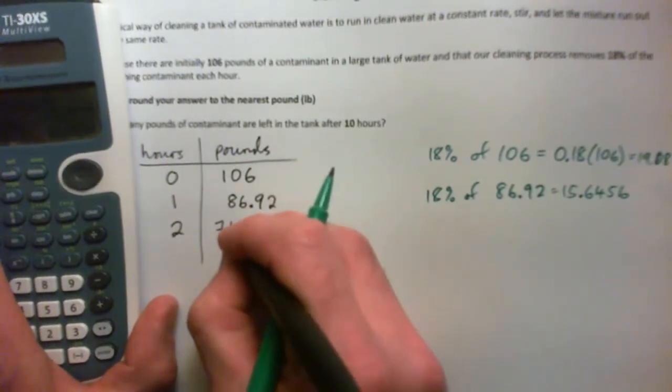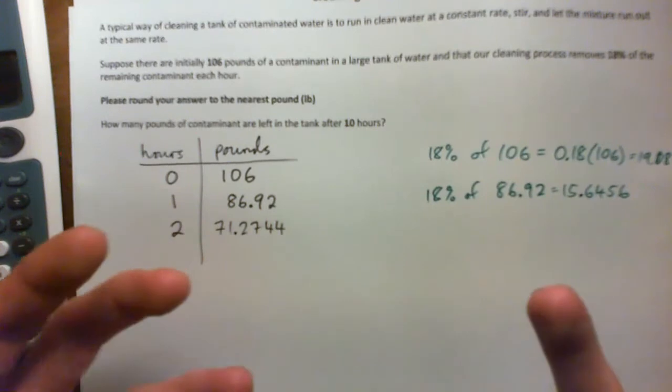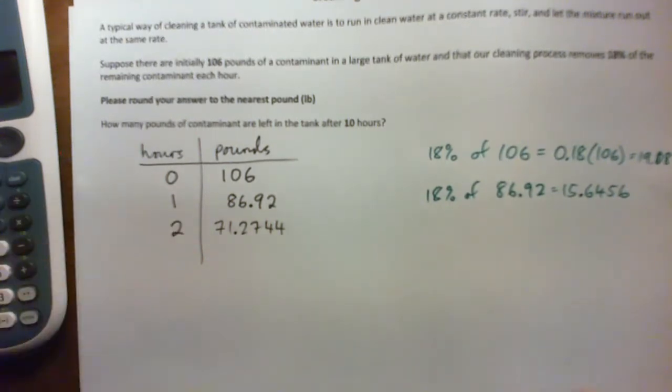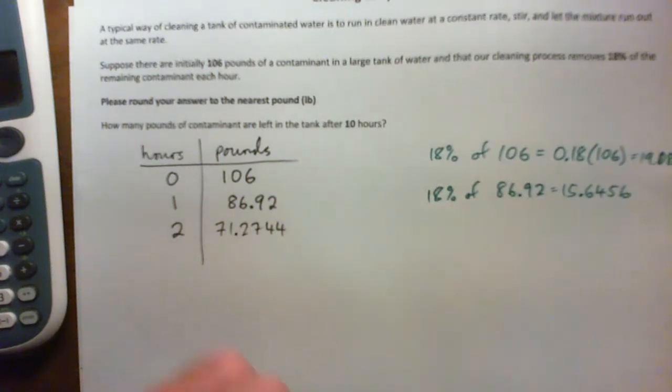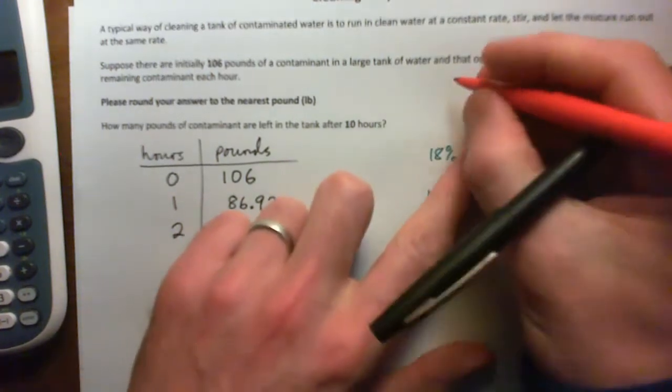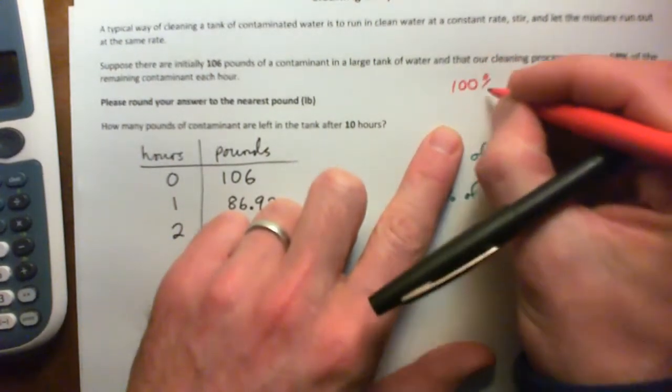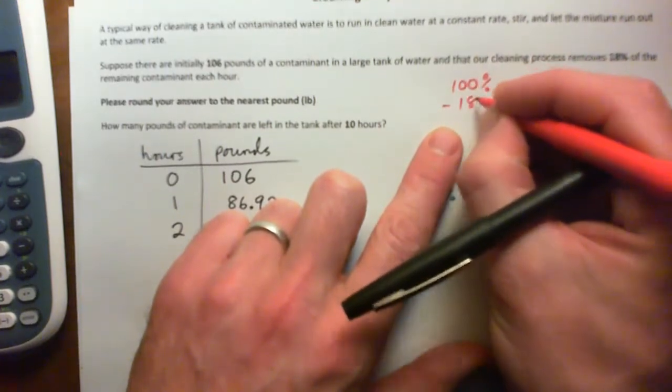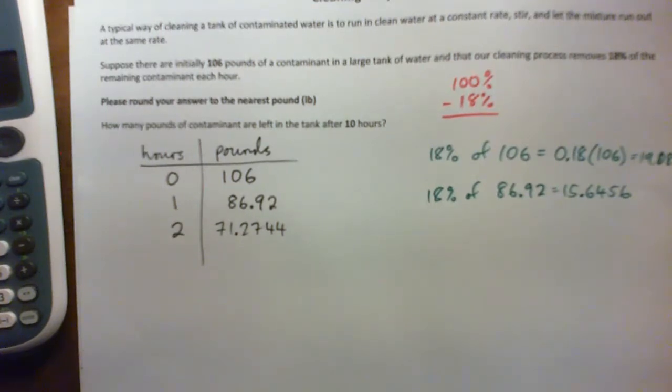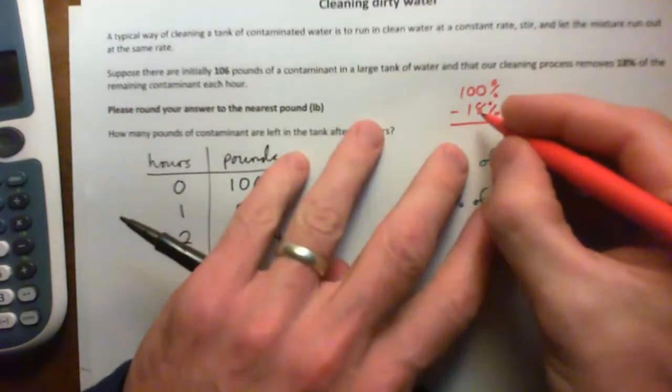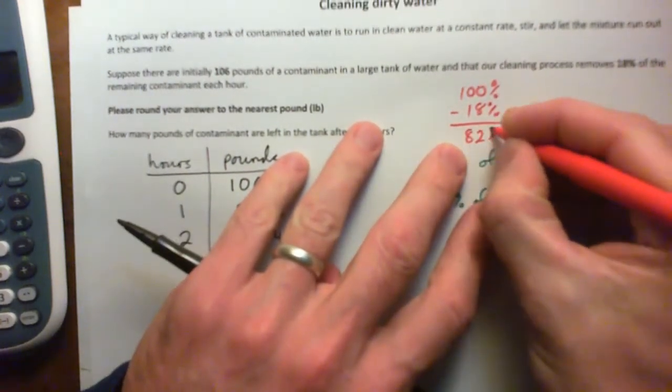Now this is a bit cumbersome. There's a cooler way of getting the amount. And what we do is we say, what's 100% minus 18%? Can you figure that out for me? What's 100% minus 18%? Right, so that's 82%.